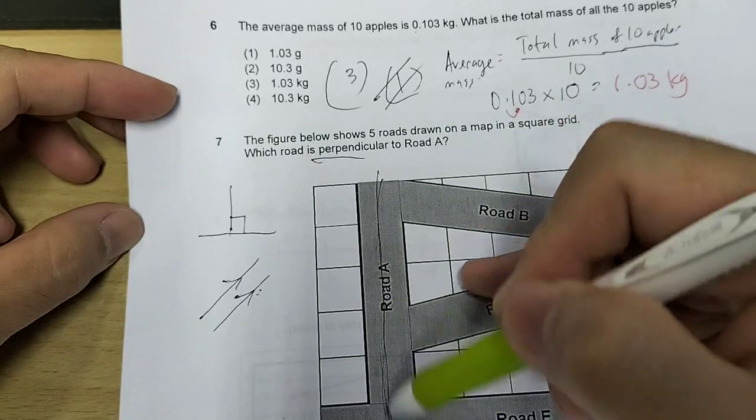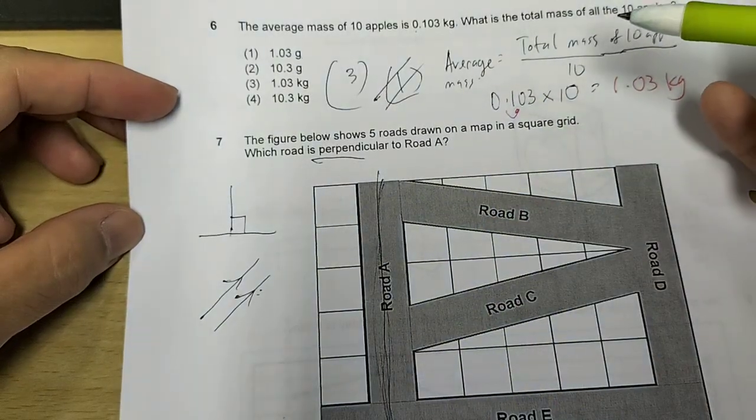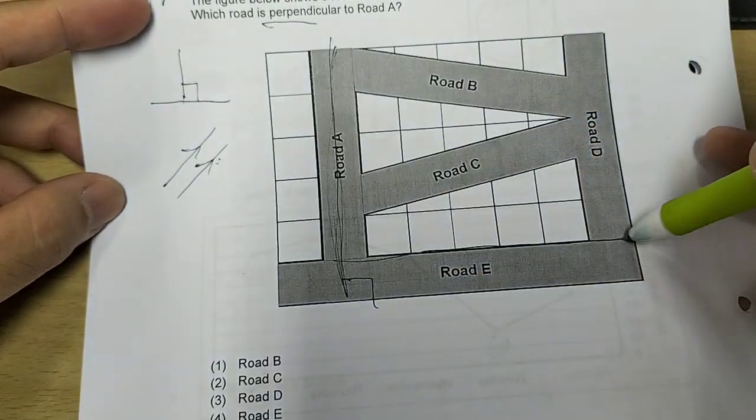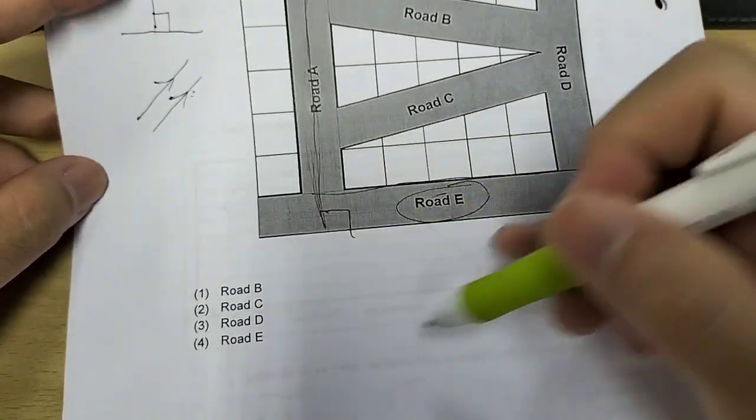Now, road A is here. This is road A. So which road is perpendicular? It must meet at right angle, right? So this is the only one at right angle. And this will be road E. Answer is 4.